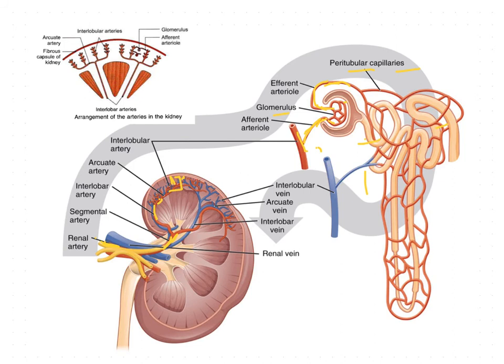The peritubular capillaries also occupy the loop of Henle located in the medulla, where selective reabsorption takes place. Finally, the filtered blood ends up in the interlobular vein, which is a tributary of the interlobular vein system.